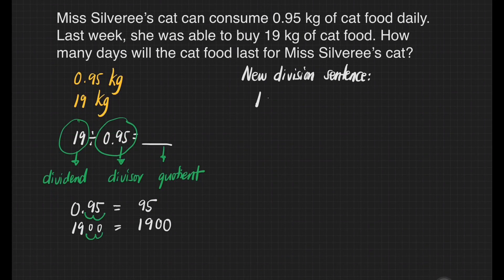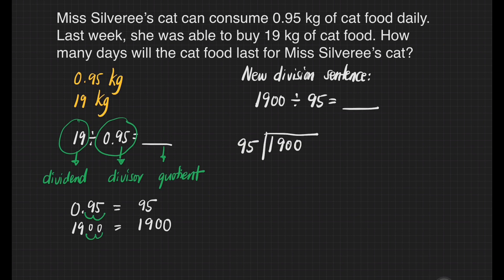Our new division sentence is 1,900 divided by 95 is equal to blank. Let's start dividing. How many 95s are there in 1? There's none. How many 95s are there in 19? There's none.